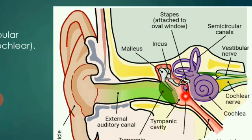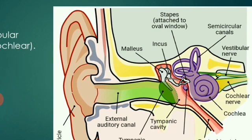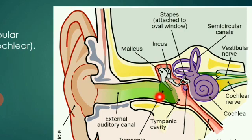The middle ear is an air-filled part of the ear. It contains a long tube called the eustachian tube, which opens into the throat region, specifically into the pharynx. The function of the eustachian tube is to equalize the pressure on either side of the eardrum.